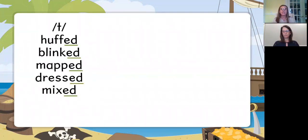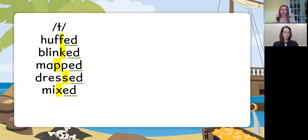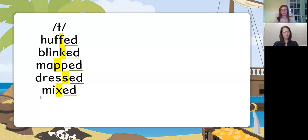The first sound of ED is a T sound. We say T for ED after a voiceless consonant, except for the letter T. The voiceless letters are F, K, P, S, and X. So if the base word ends with a voiceless letter, the ED is going to sound like a T. Listen: huffed, blinked, mapped, dressed, mixed — did you hear a T sound? Now Joanna, I want you to read these words and make a T sound when you get to ED. We heard T at the end because the base word ended with a voiceless sound.